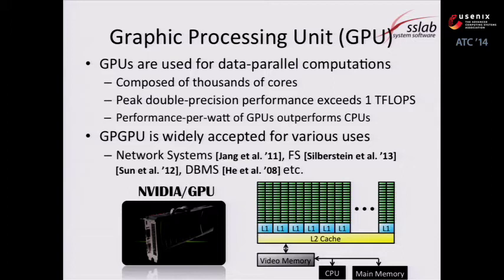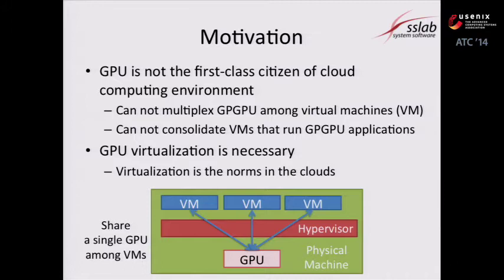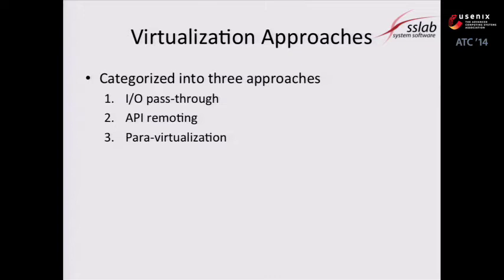However, the current GPU is not a first-class citizen of the cloud. Since GPU is not virtualized properly, we cannot multiplex the physical GPU among virtual machines or consolidate VMs that run GPU applications. Current virtualization approaches can be categorized into three: IO pass-through, API remoting, and para-virtualization.